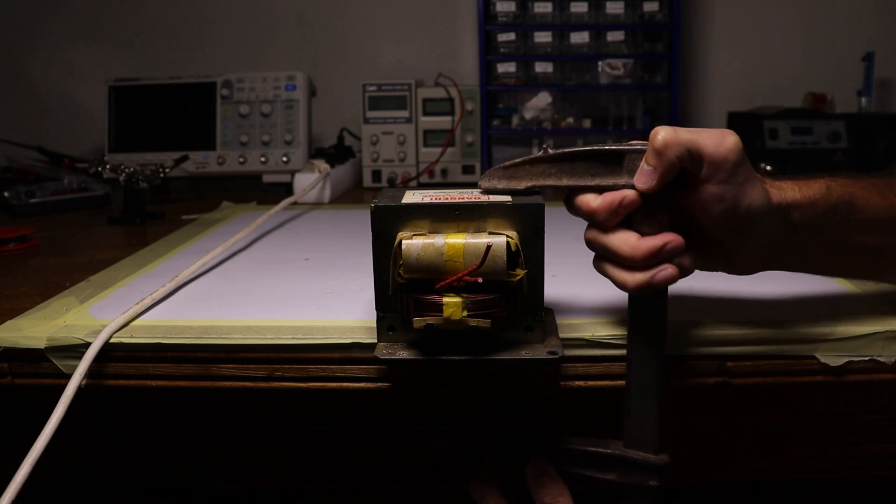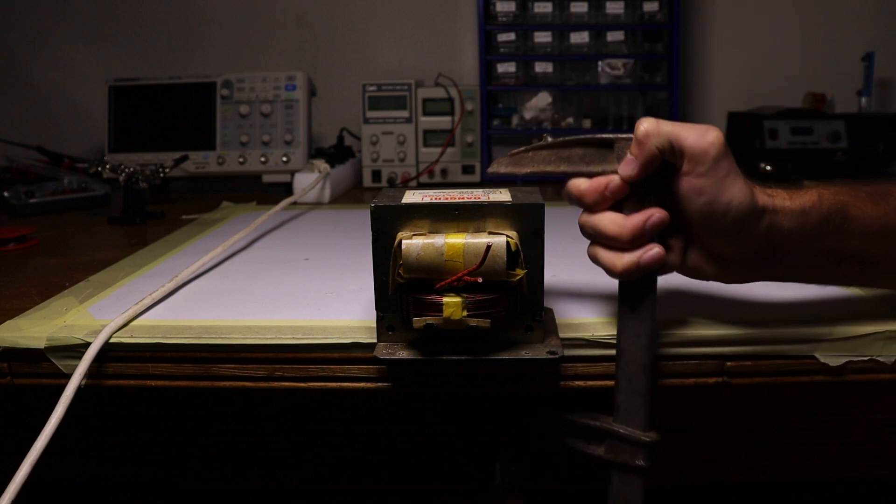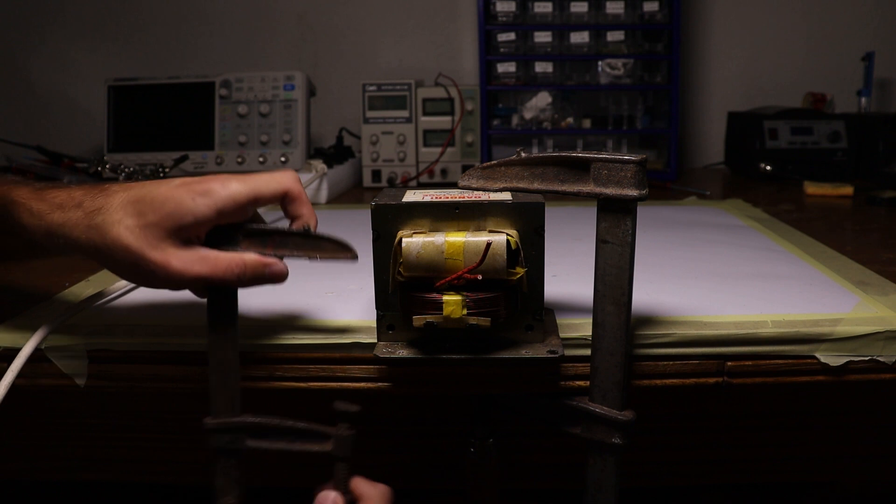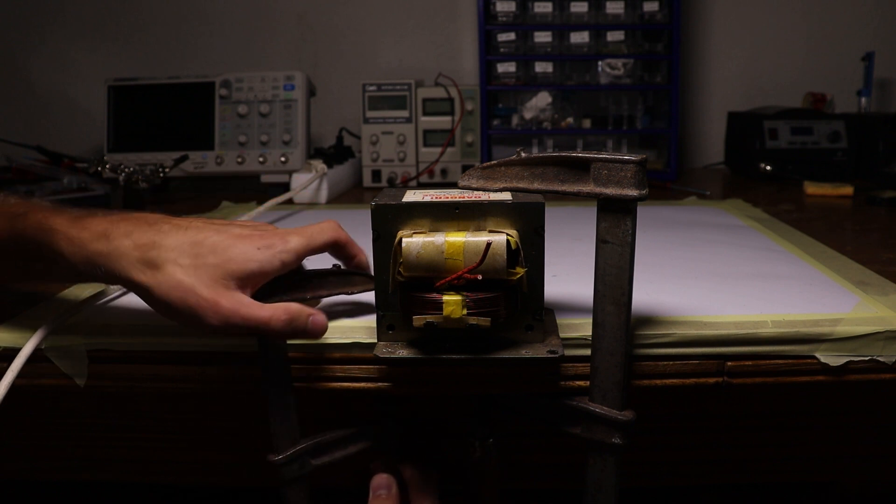Now it was time for modifying the other transformer, which I secured to my desk with clamps, and after that I used my hand saw to remove the front side of the secondary winding.